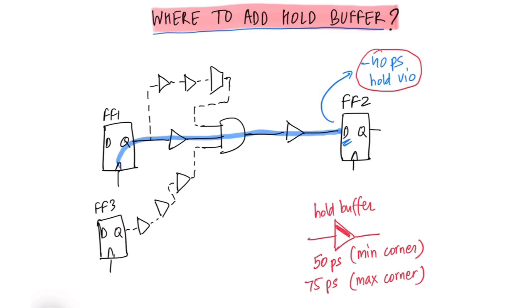So when we add this buffer to fix the hold violation, we have to make sure that the setup slack or the setup margin of all the timing paths which go through this buffer is at least 75 picoseconds. Otherwise, this buffer addition will cause setup timing violations in our design.